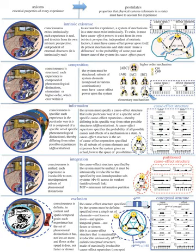A mechanism refers to a subset of system elements. The mechanism-level quantities are used to assess the integration of any given mechanism, and the system-level quantities are used to assess the integration of sets of mechanisms. In order to apply the IIT formalism to a system, its full transition probability matrix (TPM) must be known. The TPM specifies the probability with which any state of a system transitions to any other system state. Each of the following quantities is calculated in a bottom-up manner from the system's TPM.